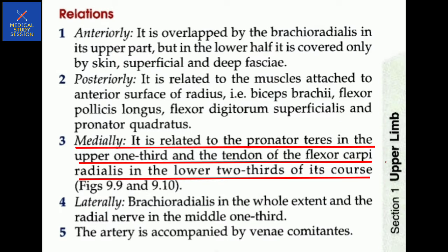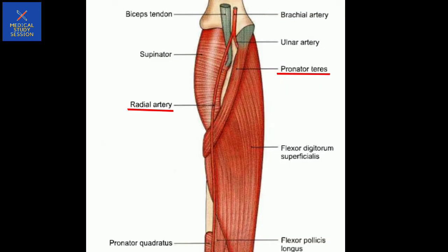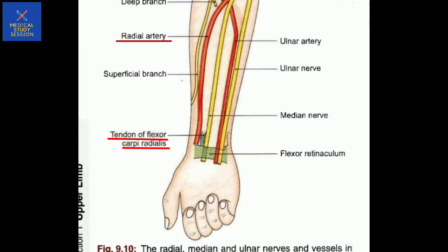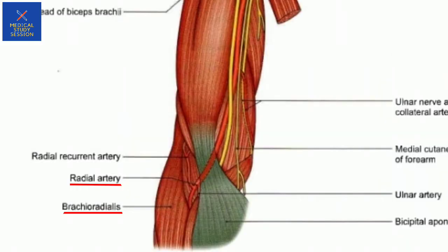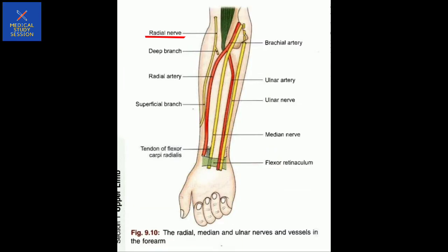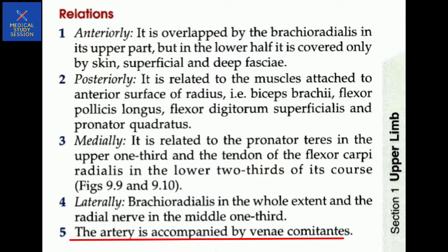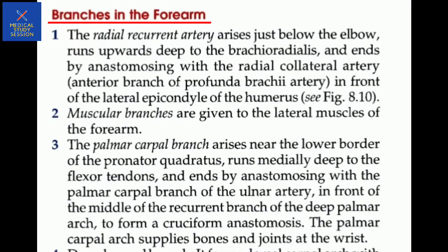Posteriorly, the artery relates to muscle attachments on the anterior surface - biceps, brachialis, flexor pollicis longus, flexor digitorum superficialis, and pronator quadratus. Medially, it is related to the pronator teres in the upper one-third, and the tendon of flexor carpi radialis in the lower two-thirds. In the middle one-third, the radial nerve accompanies the radial artery. The artery is accompanied by venae comitantes throughout its course in the forearm.